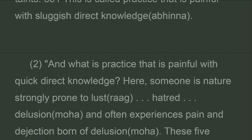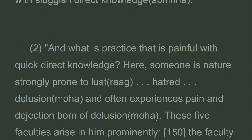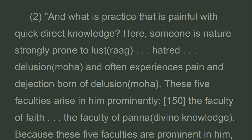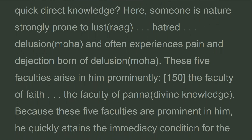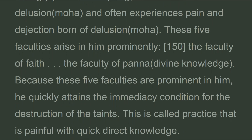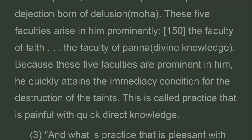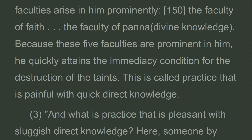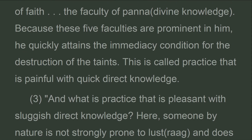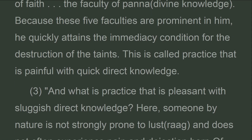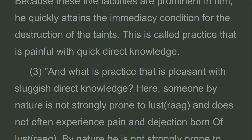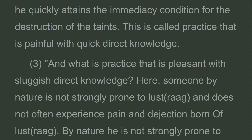And what is practice that is painful with quick direct knowledge? Here, someone is by nature strongly prone to lust, hatred, and delusion, and often experiences pain and dejection. These five faculties arise in him prominently: the faculty of faith through the faculty of wisdom. Because these five faculties are prominent, he quickly attains the immediacy condition for the destruction of the taints. This is called practice that is painful with quick direct knowledge.